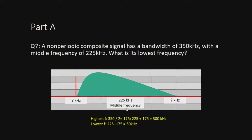The middle frequency minus 175 gives the lowest frequency, and the middle frequency plus 175 gives the highest frequency. So the highest frequency is 225 plus 175 equals 400 kilohertz. The lowest frequency is 225 minus 175 equals 50 kilohertz. Since the question asks for the lowest frequency, the answer is 50 kilohertz.